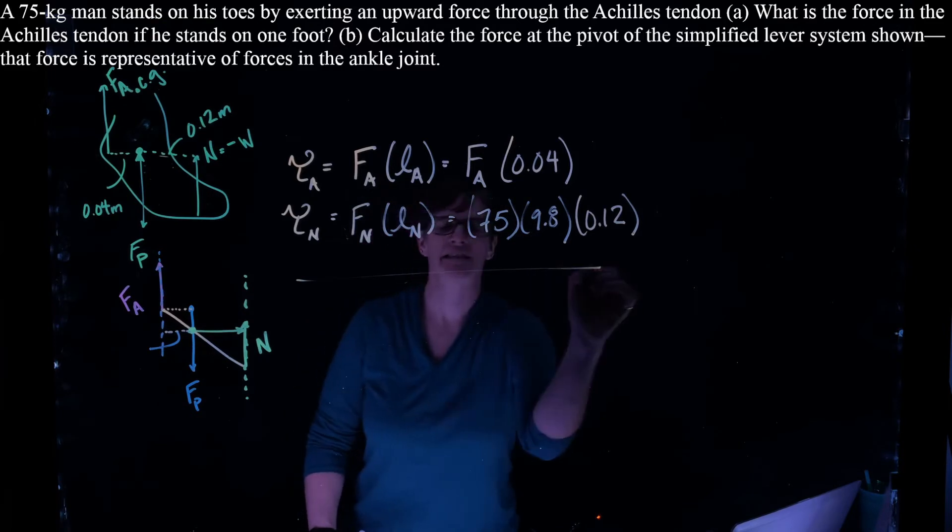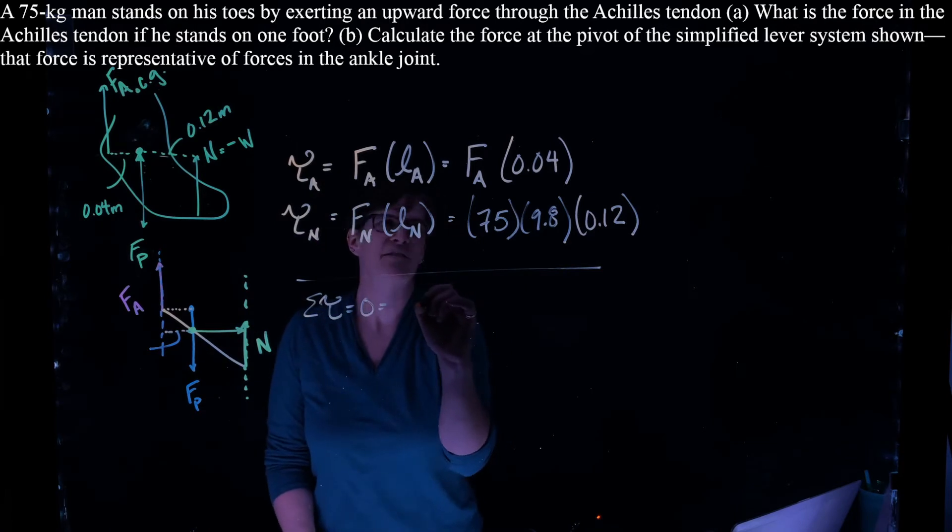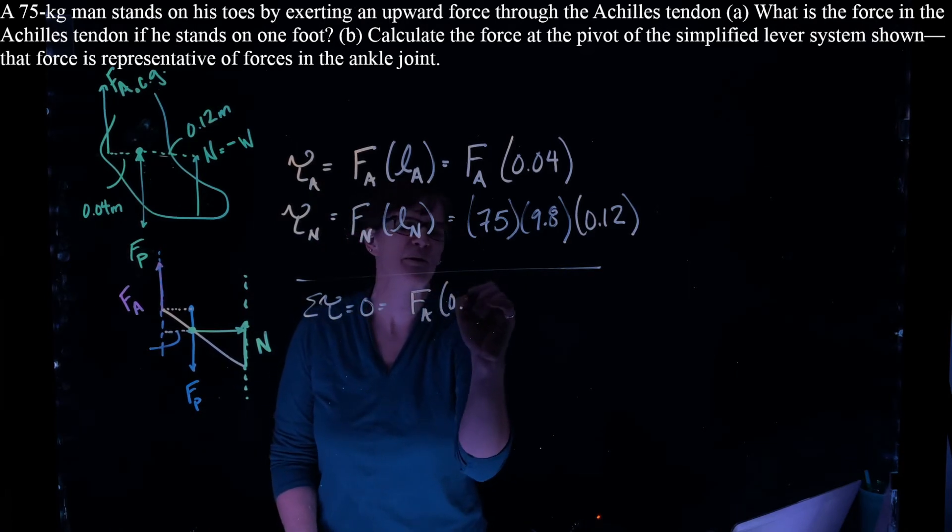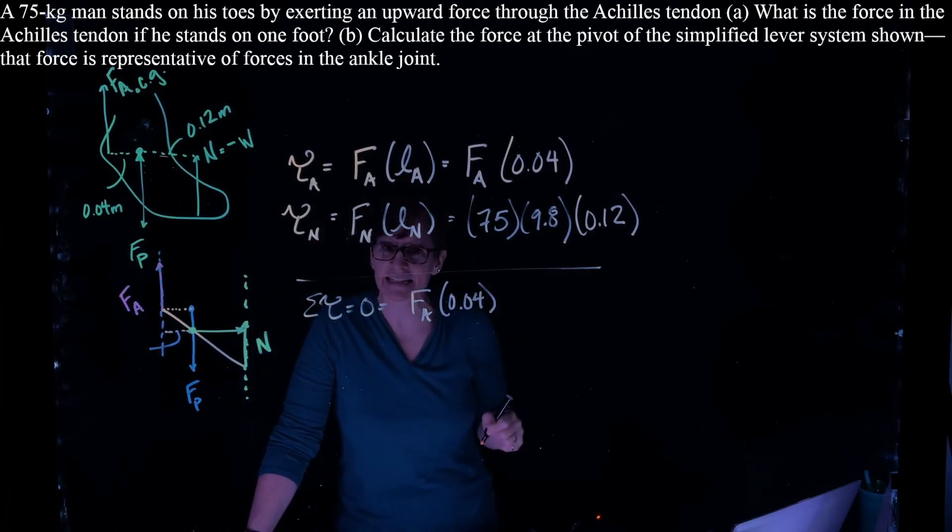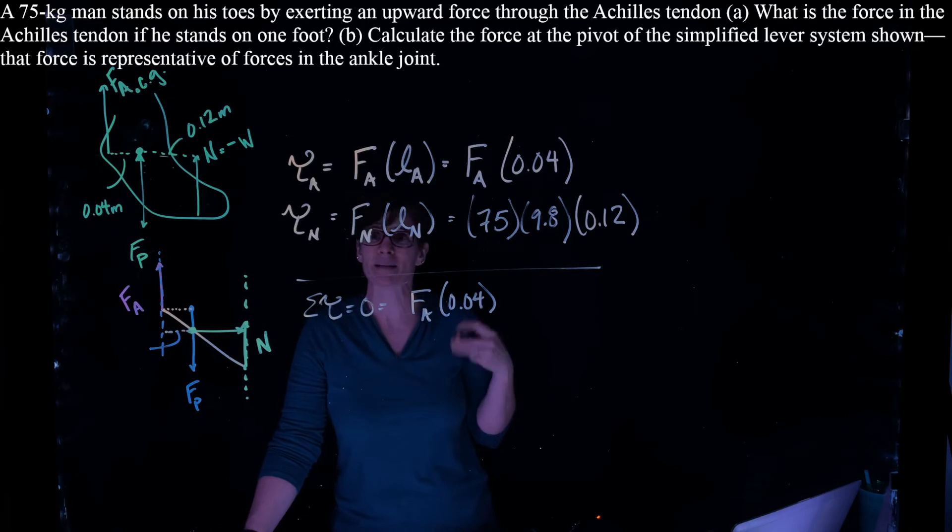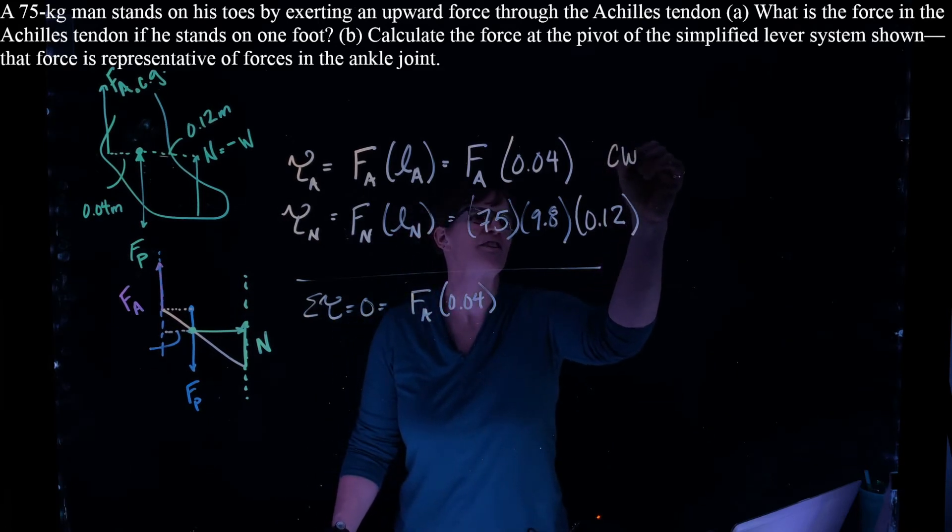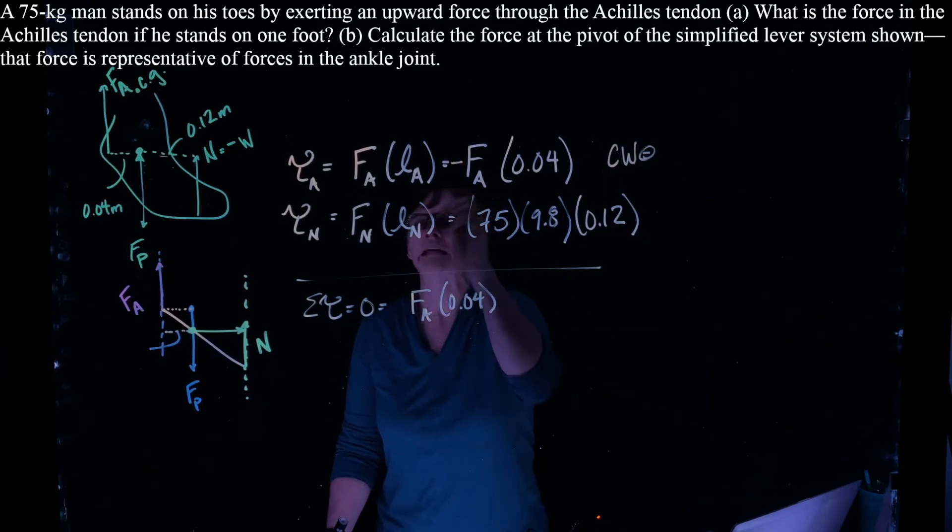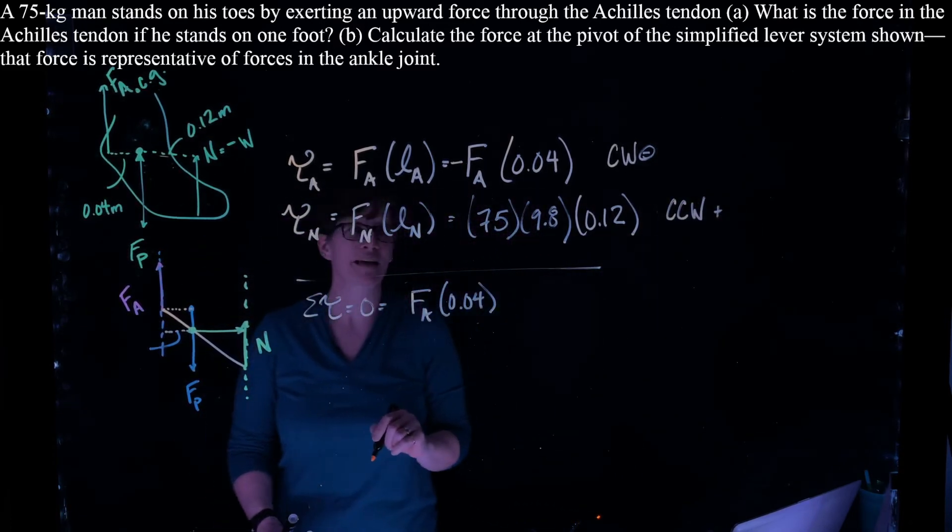And so I can take the sum of my torques is going to equal 0 if I'm in equilibrium. So we have the force of the ankle times 0.04. And once again, I neglected to put in those directions. We catch ourselves because the sum of the forces has to equal 0. So our counterclockwise and our clockwise torques have to be considered. The Achilles is trying to rotate the ankle in the clockwise direction. So that's our negative. And the normal force tries to rotate it in the counterclockwise. So that's our positive.